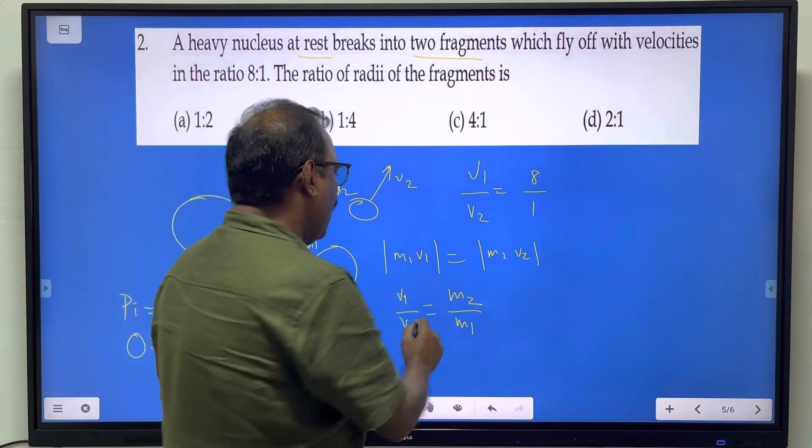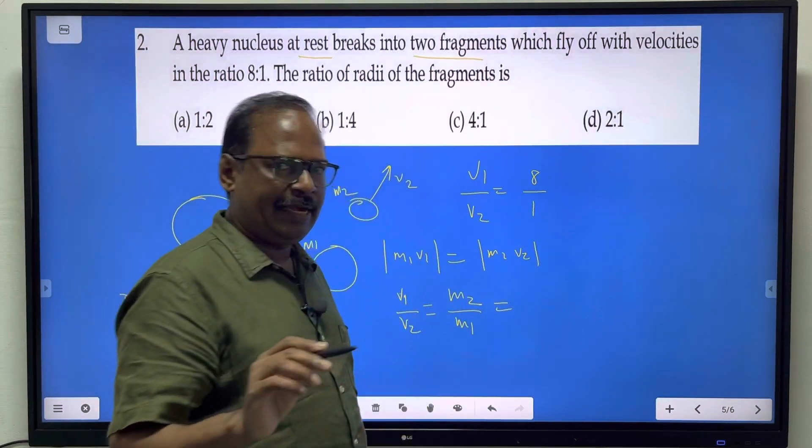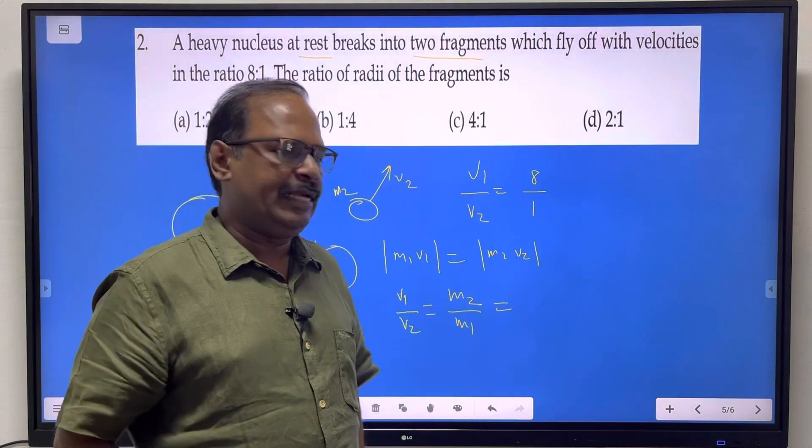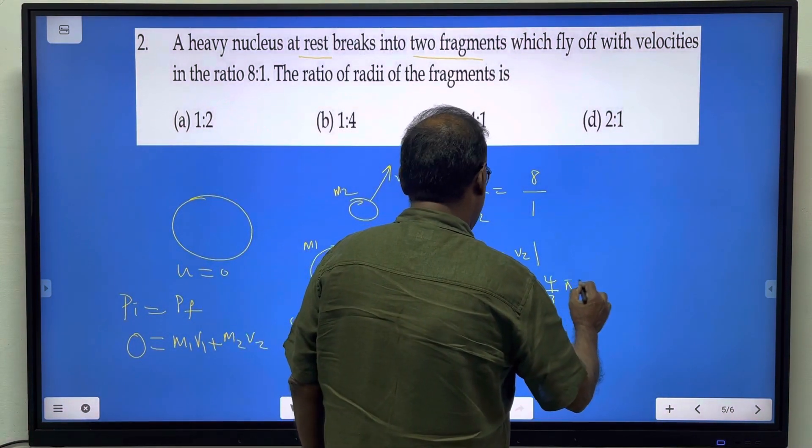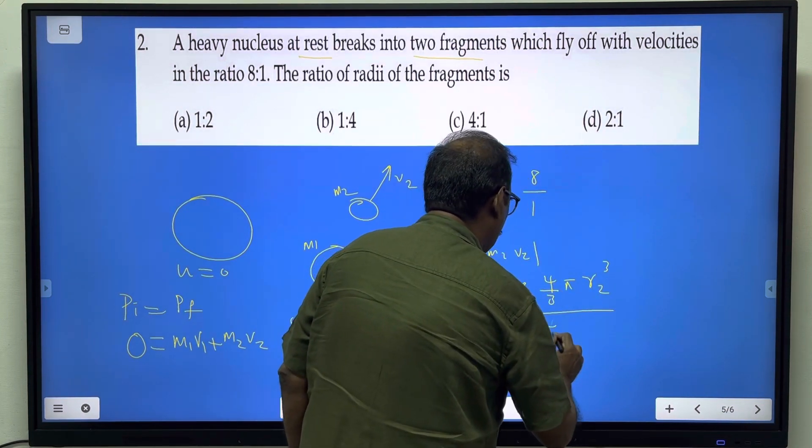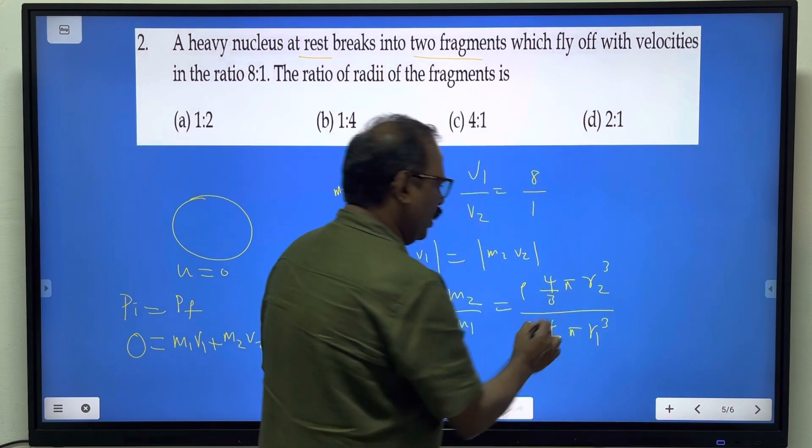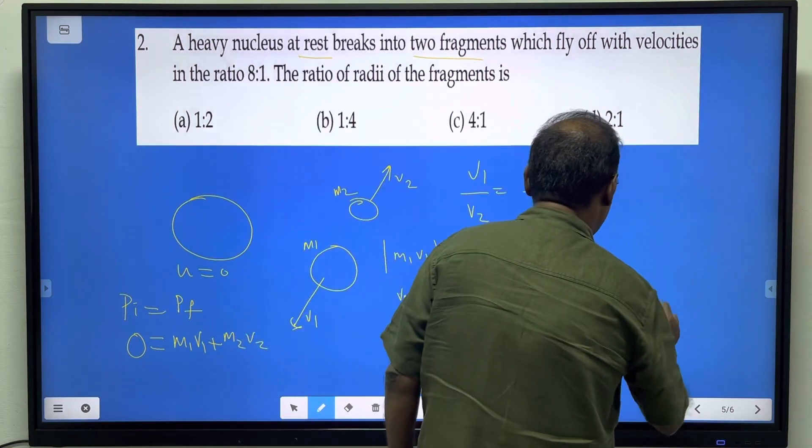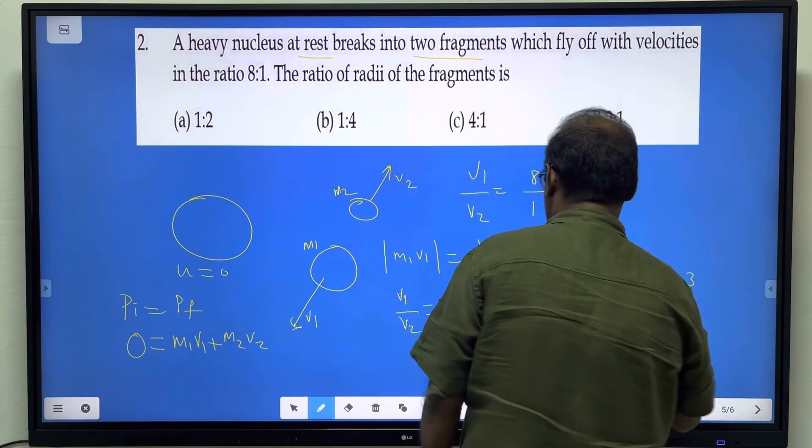Now mass equals density times volume. Nuclear density for all nuclei is a constant. Mass is density times volume: 4 by 3 pi r2 cube and density times 4 by 3 pi r1 cube. All the common terms cancel out, so you get r2 by r1 whole power 3.